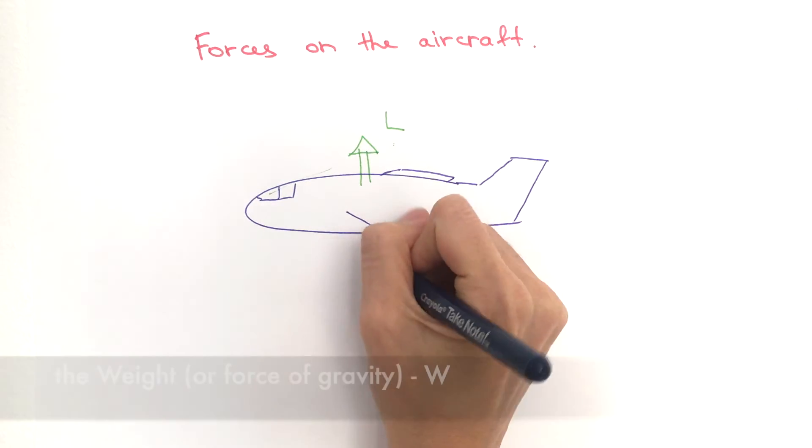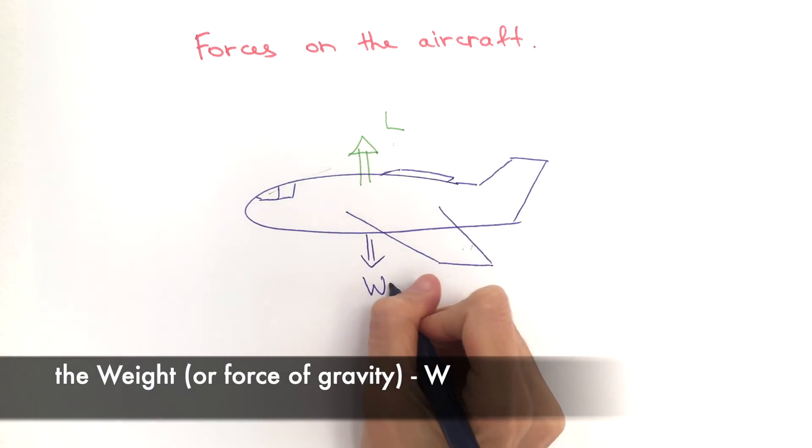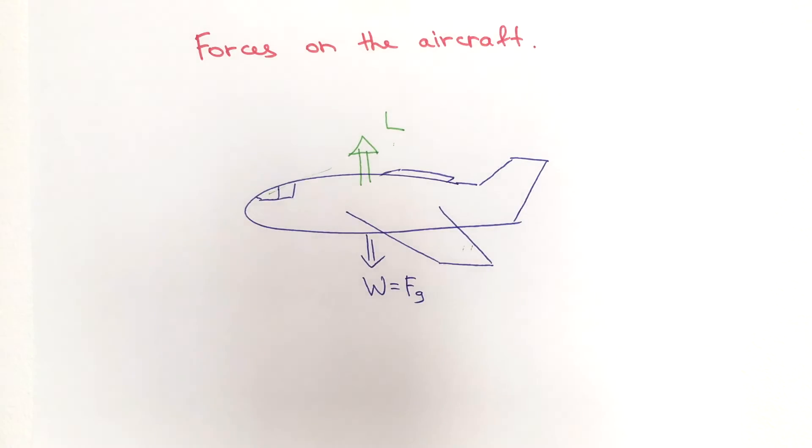I hope you said that it's weight. Weight, or force of gravity - gravity, thou art a heartless bitch - it's always acting downwards and it always wants to bring the aircraft down. But there are more forces. In order to